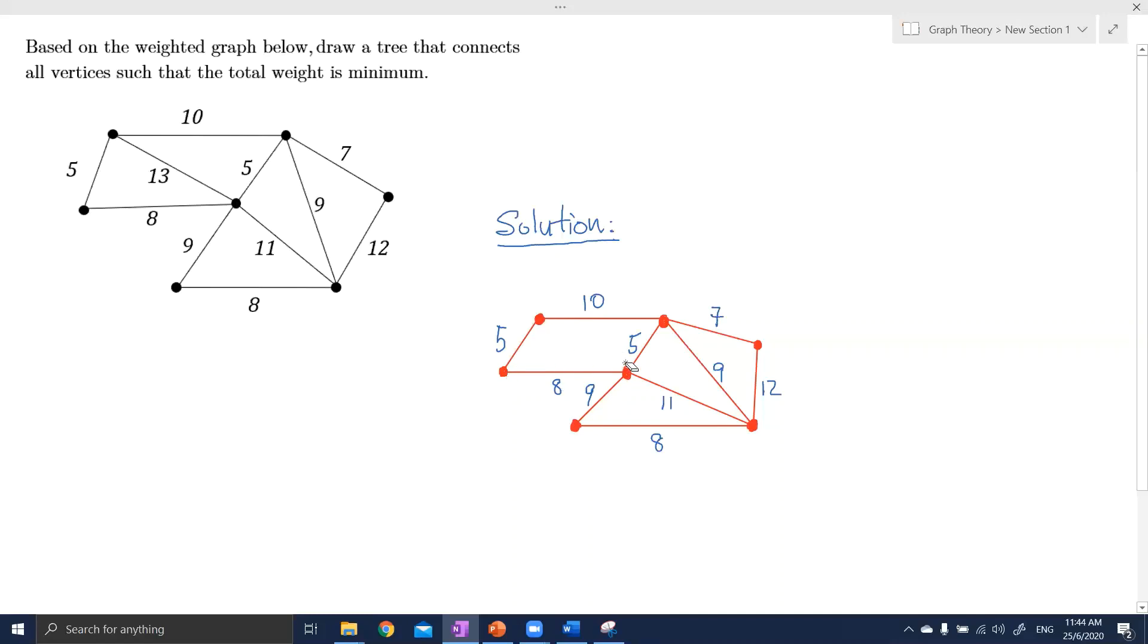So now we have another cycle here which is 5, 8, 5, and 10. Again, from this cycle, we can remove this 10 because 10 is the largest among them. So we remove this edge.